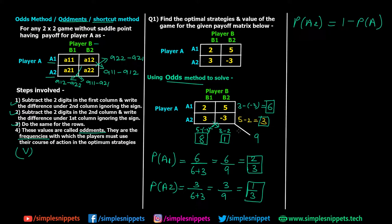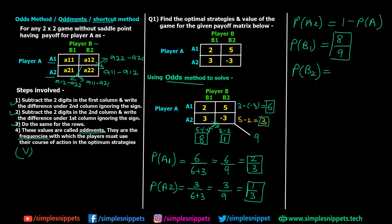For player B, the probability of using B1 is the oddment of B1 over the total of B1 and B2 oddments: eight over eight plus one, which is eight over nine. The probability of using B2 is one over eight plus one, giving one over nine.